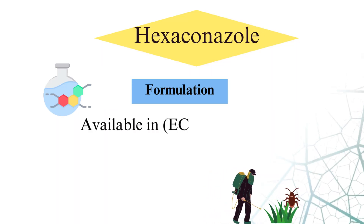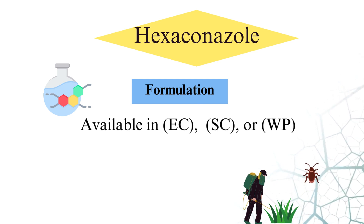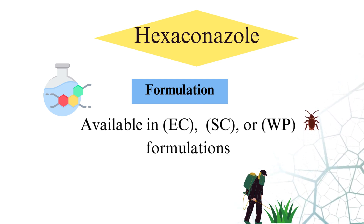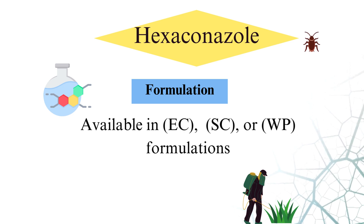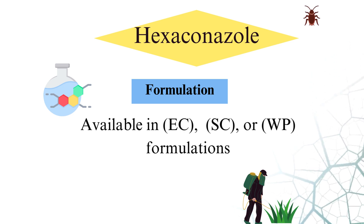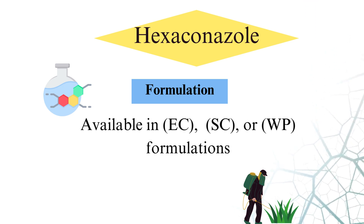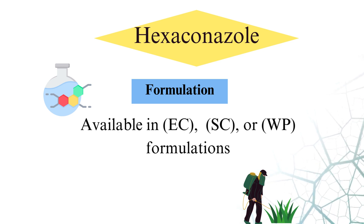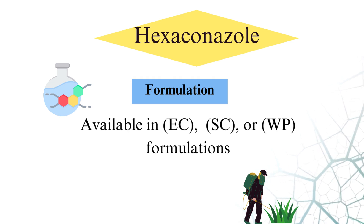Formulation. Hexaconazole is formulated as an emulsifiable concentrate (EC), suspension concentrate (SC), or a wettable powder (WP). These formulations ensure proper dispersion and absorption of the active ingredient into plant tissues, providing systemic protection against fungal pathogens.